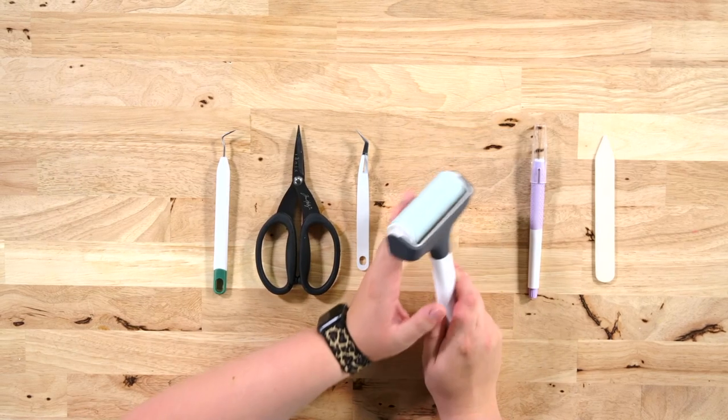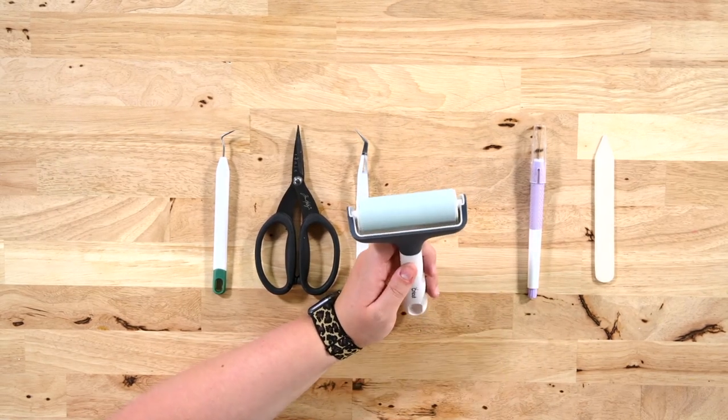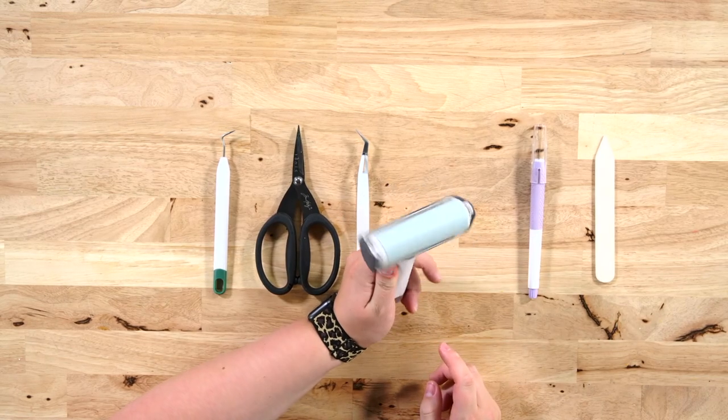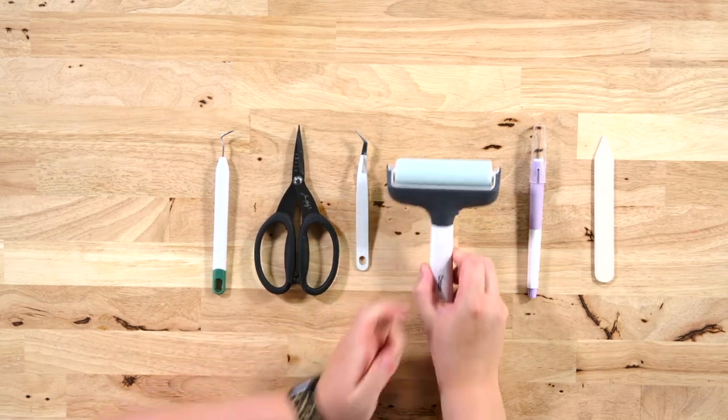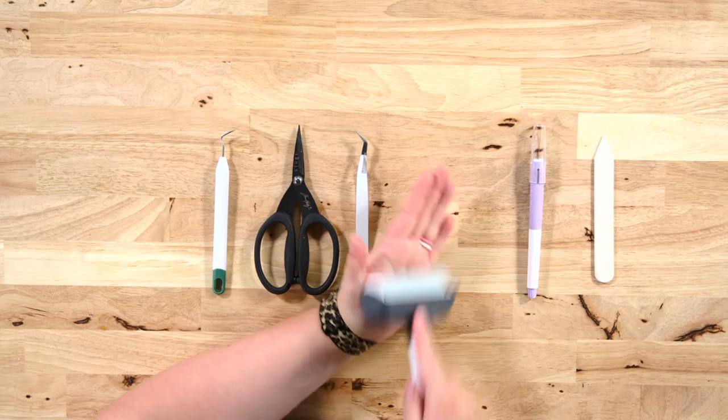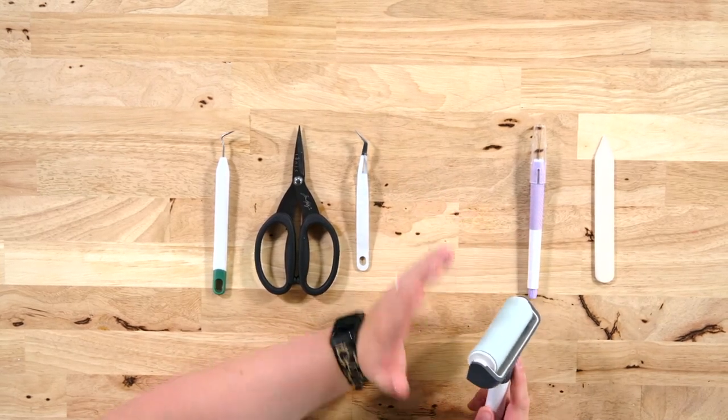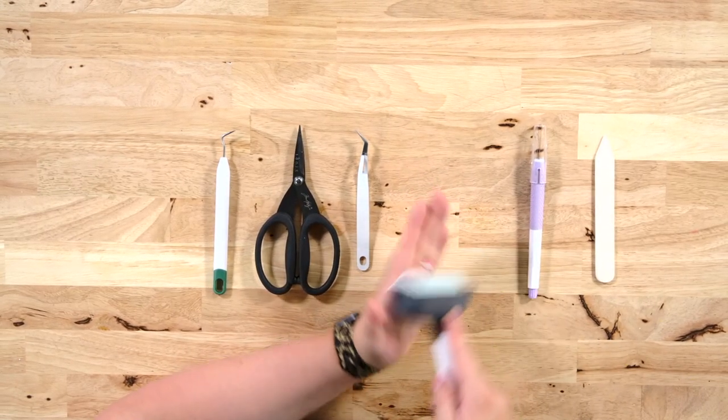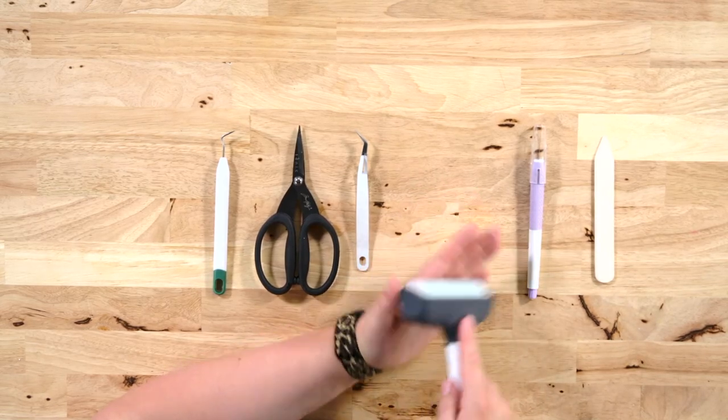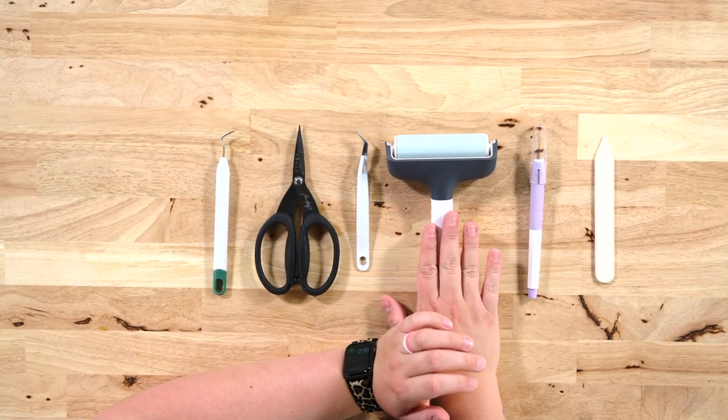We use our brayer all the time for our Cricut crafts. This helps us a lot when we're paper crafting or crafting with heat transfer vinyl or regular vinyl to help push our material on our mat to get it to cut well or after it's cut, braying it down and burnishing it before we weed. We use this on the daily.